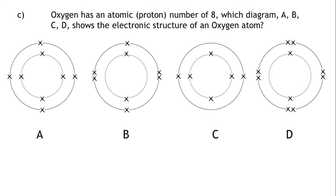Part C. Oxygen has an atomic number, or proton number, of eight. Which diagram, A, B, C or D, shows the electronic structure of an oxygen atom?